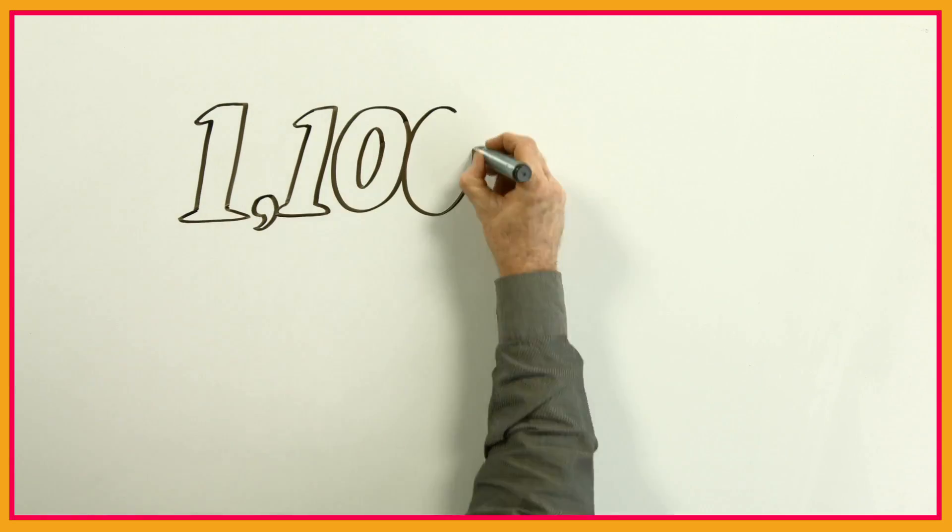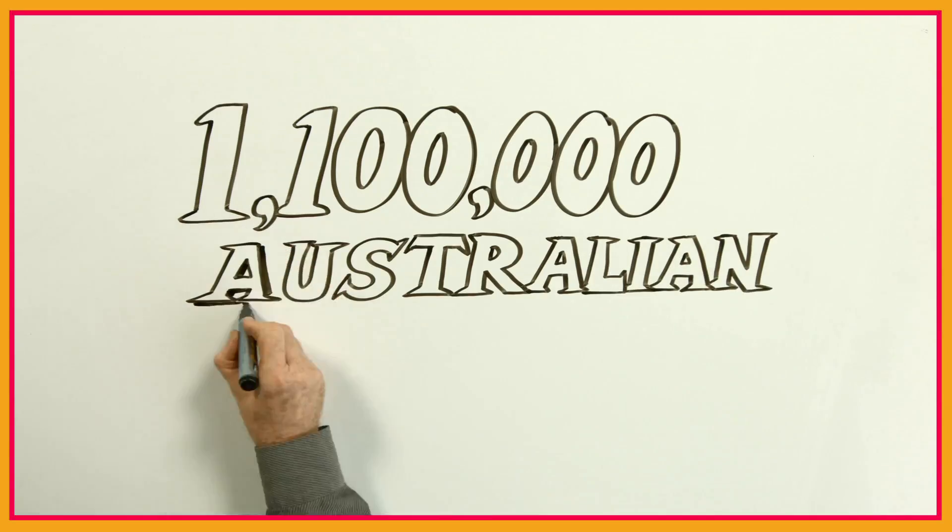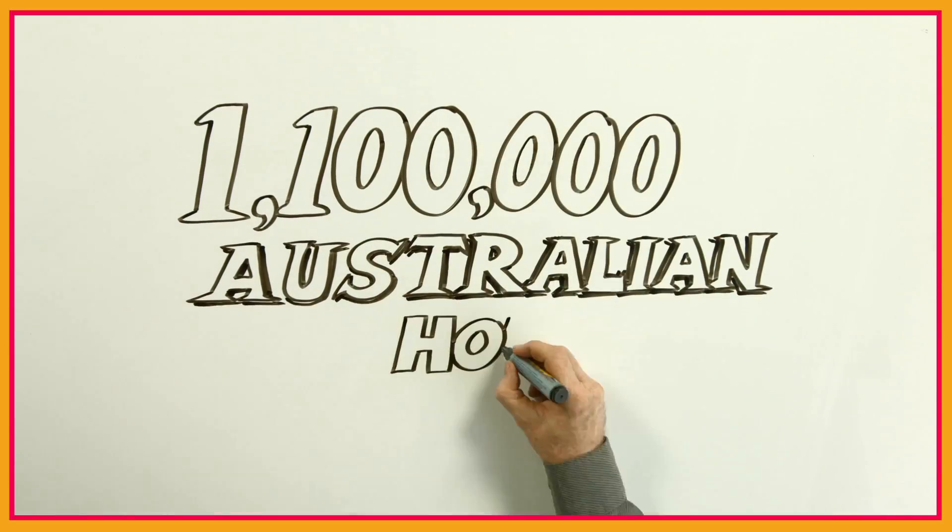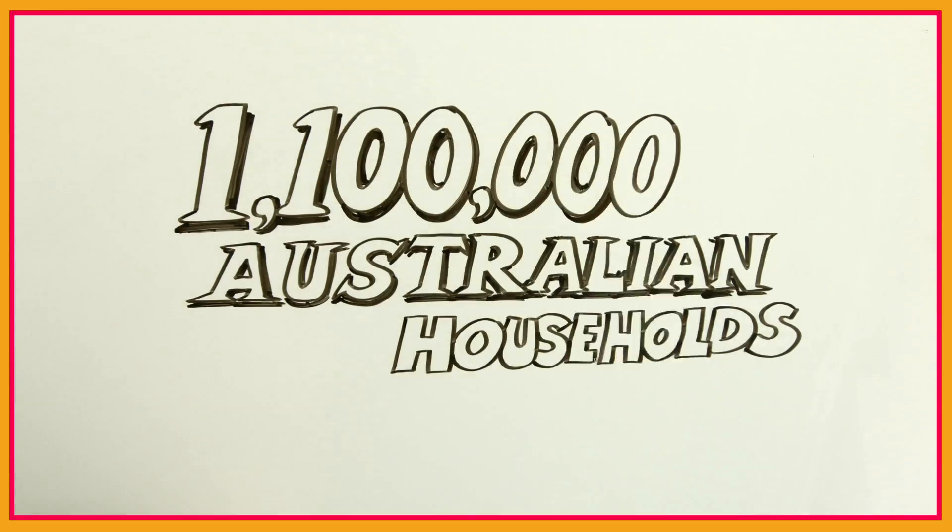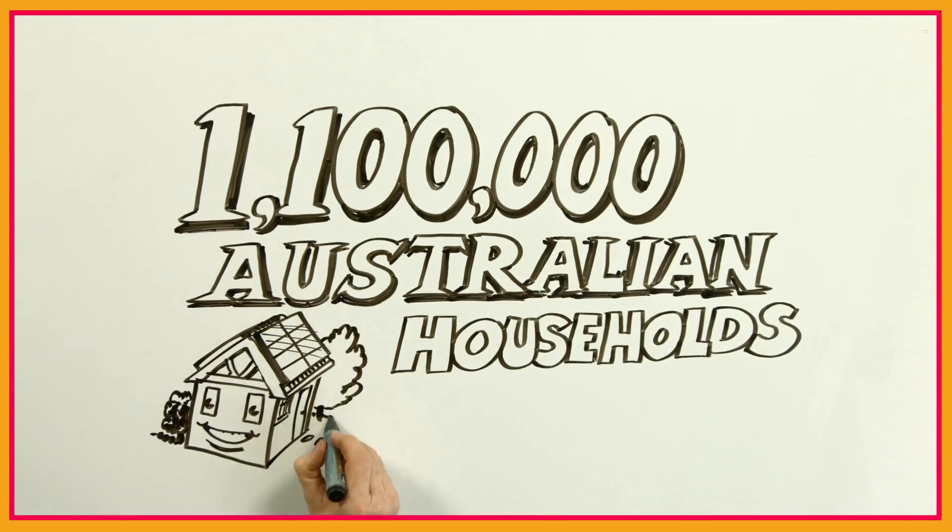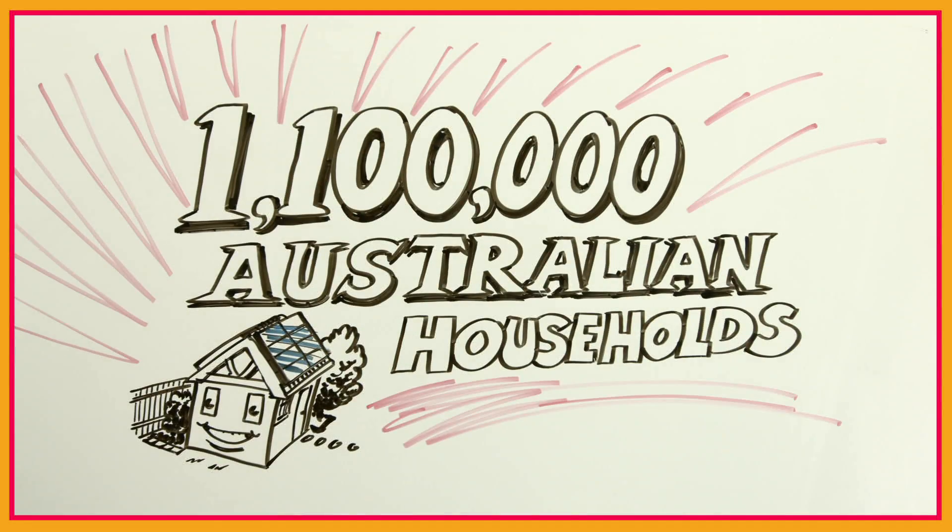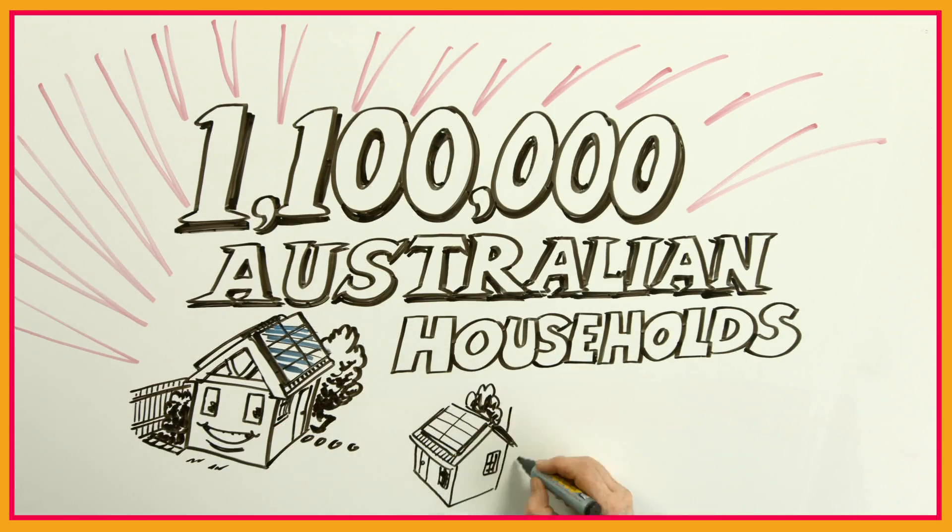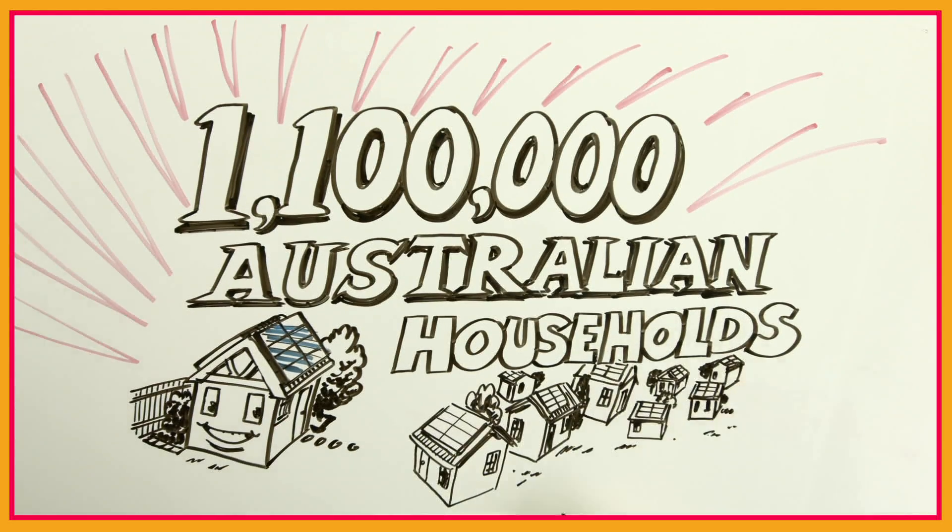And even though we're not keeping up with the rest of the world, that's not to say Australians don't love renewables. By the end of 2013, over 1.1 million Australian householders had installed solar PV on their roofs to reduce their exposure to higher power prices. Ten to fifteen thousand more homes add solar PV each month.